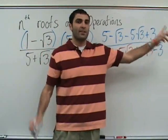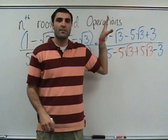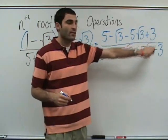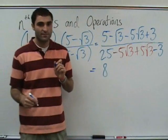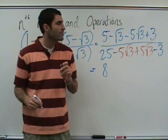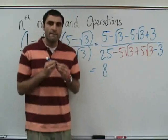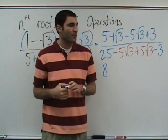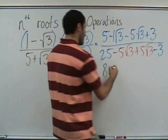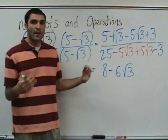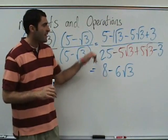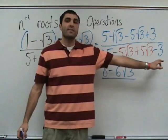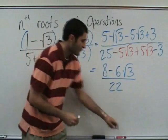Remember the rules we talked about. What combines on top? 5 and 3 make 8. What else combines? Negative root 3 and negative 5 root 3 — that's negative 6 root 3. So the top is 8 minus 6 root 3. On the bottom, 25 and minus 3 combine to make 22.